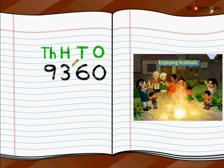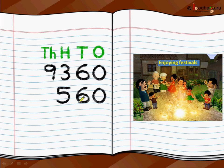There were 9360 people, so we write it down correctly: 9 at the thousands place, 3 at the hundreds place, 6 at the tens, and 0 at the ones. And 560 people came in during the festival, written at the right place. Remember, it's 560 — so we don't write this 5 at the thousands place; we leave it empty. We write the 5 at the 100th place value. You should know what number you are adding.